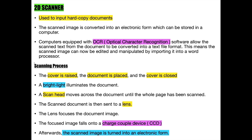Let us now go through this process. The cover of the scanner is raised, the document is placed, and the cover is closed. A bright light then illuminates the document. A scan head moves across the document until the whole page has been scanned. The scanned document is then sent to a lens, which focuses the document image. Afterwards, the focused image falls onto a charge-coupled device which converts the scanned image into an electronic form.